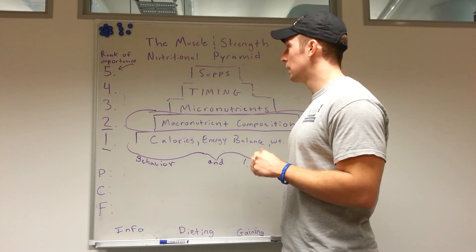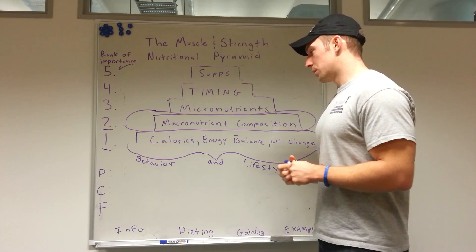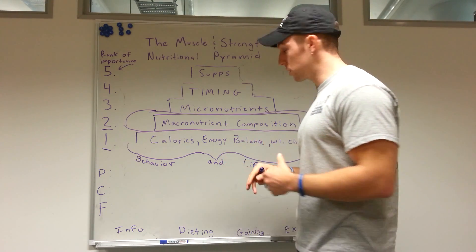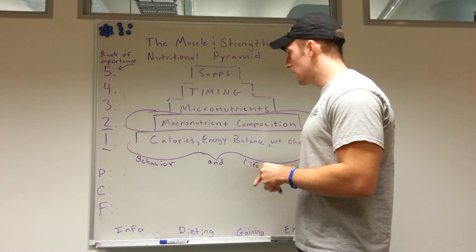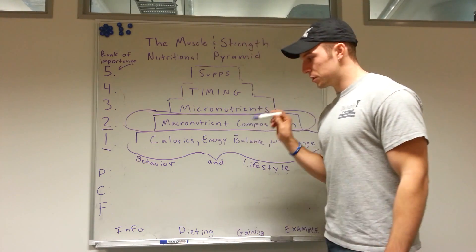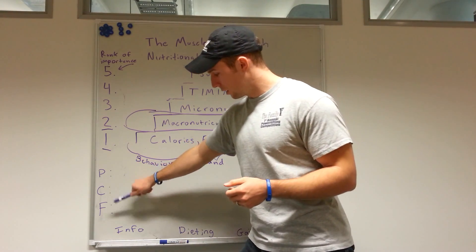So today, second installment, we're talking about the macronutrient composition of the diet. So we figured out what our calories were and where they should be depending on your goal last time. This time we're going to figure out where those calories come from.